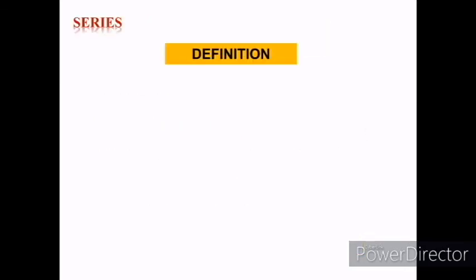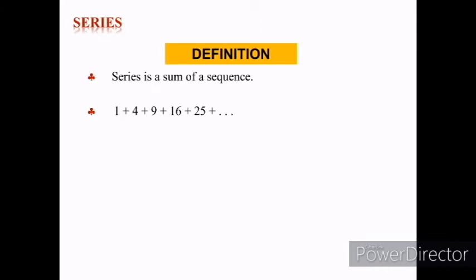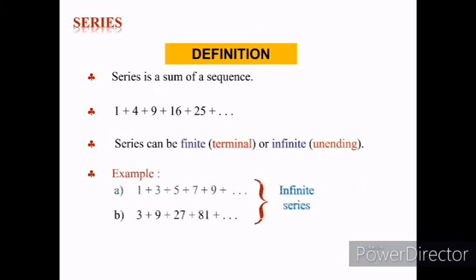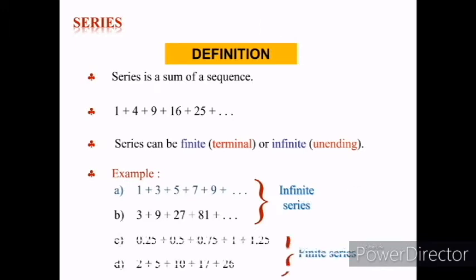Now, we will continue with series. A series is a sum of a sequence. As you can see here, the sum of the sequence 1, 4, 9, 16, 25, and so on is called a series. A series can be finite or infinite, which is unending. You can see clearly the examples of both infinite and finite series through the example shown.